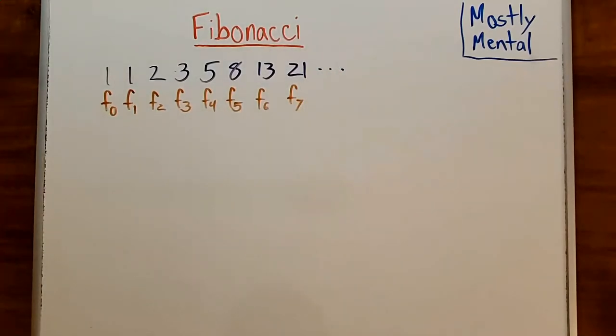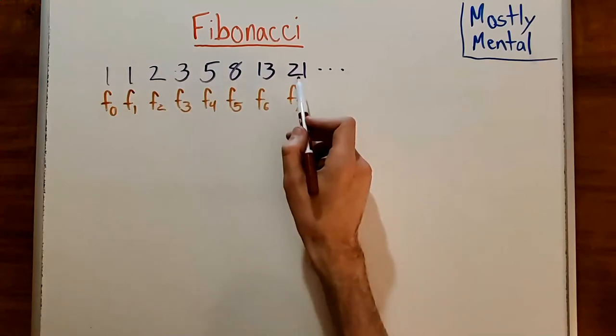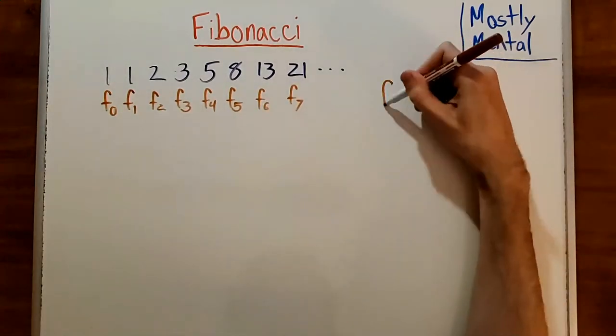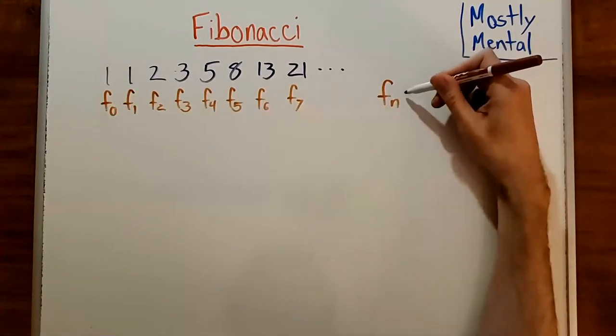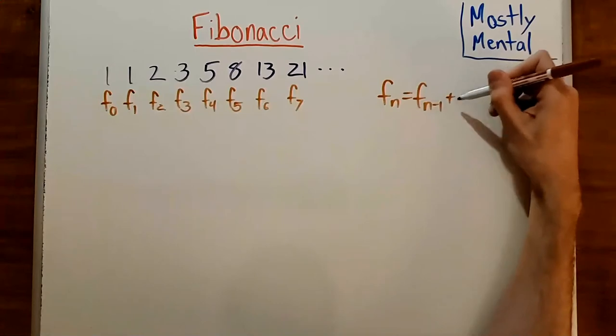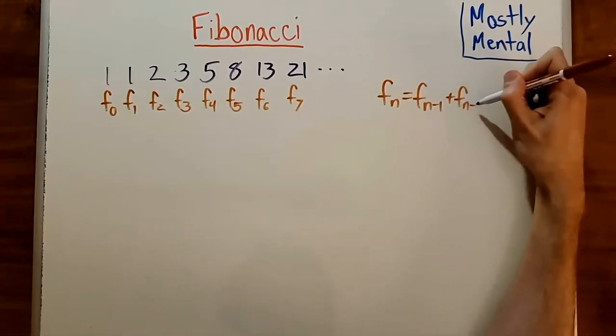And so our definition, that each of these numbers is the sum of the 2 before it, can be written as F sub n is F sub n minus 1 plus F sub n minus 2.